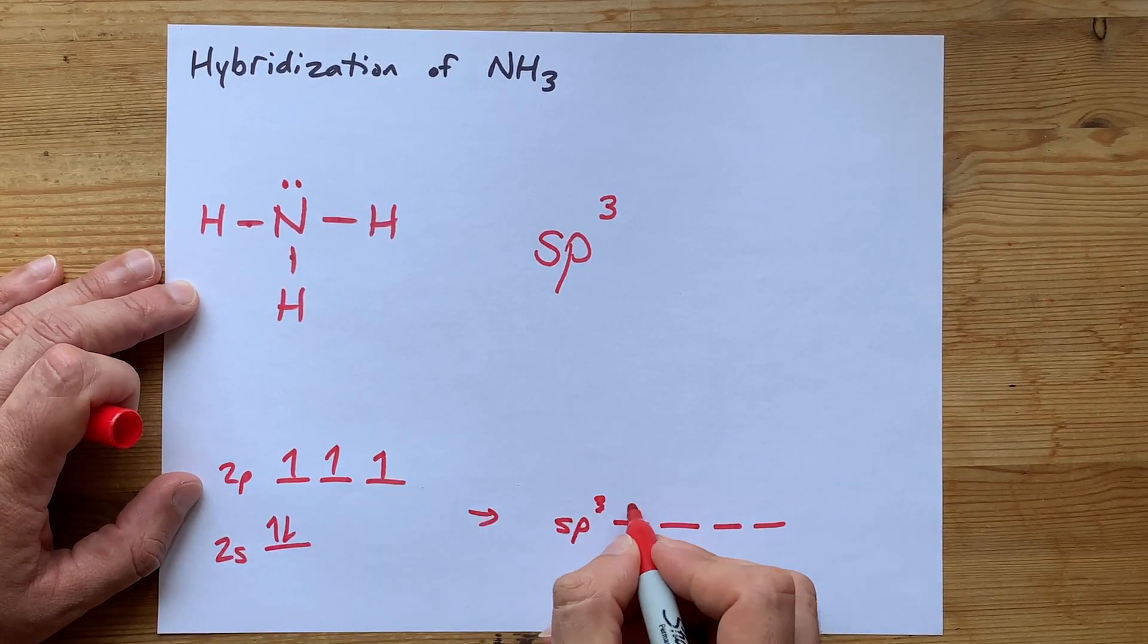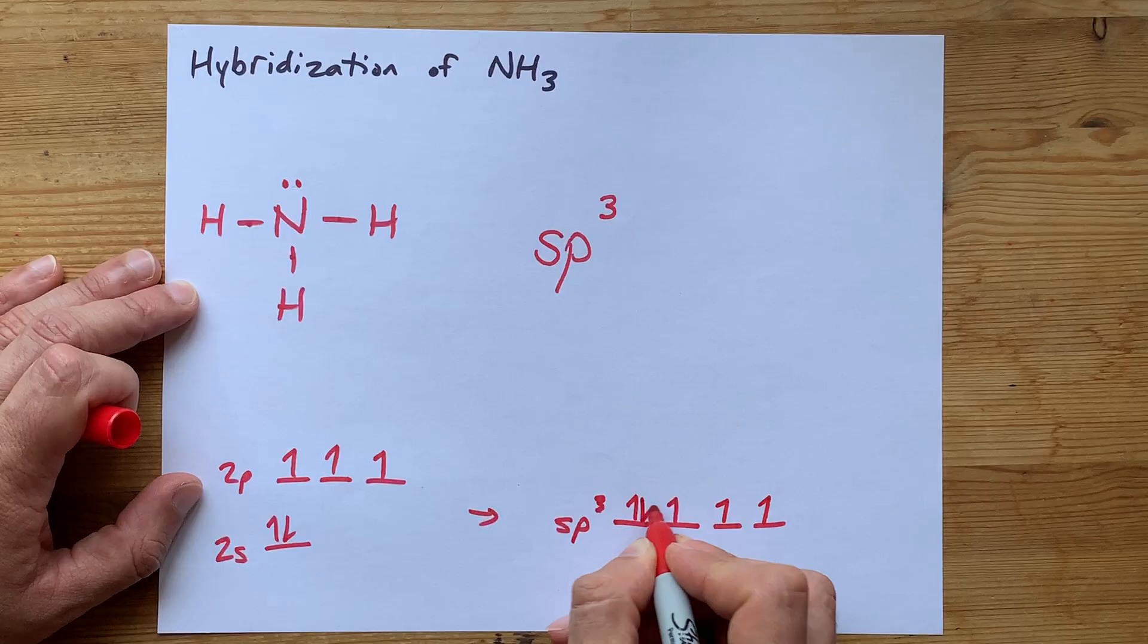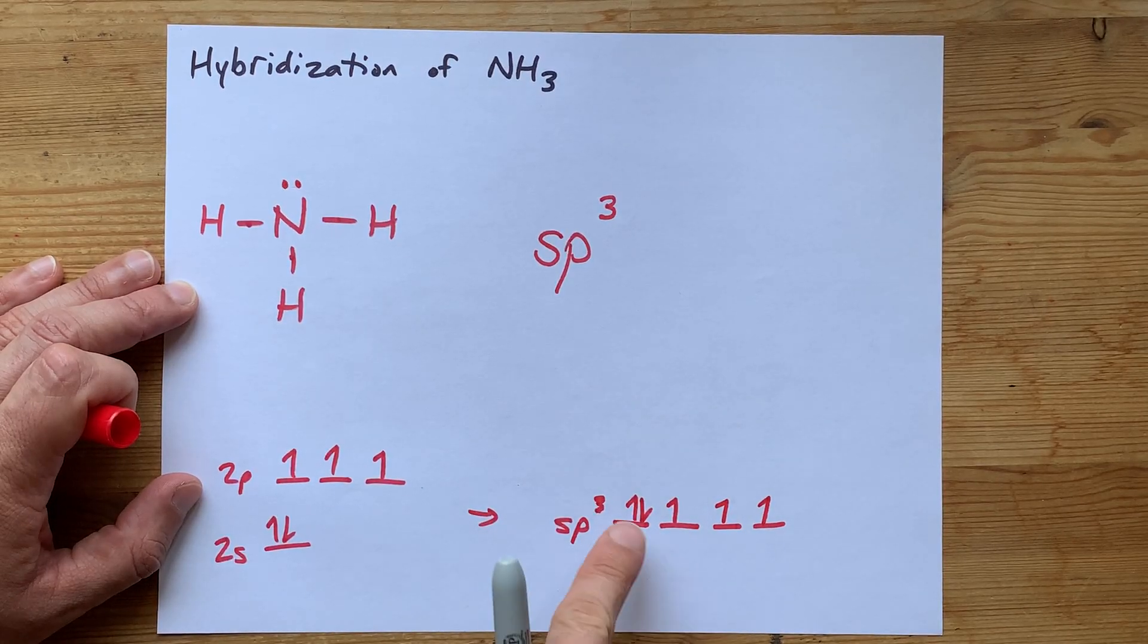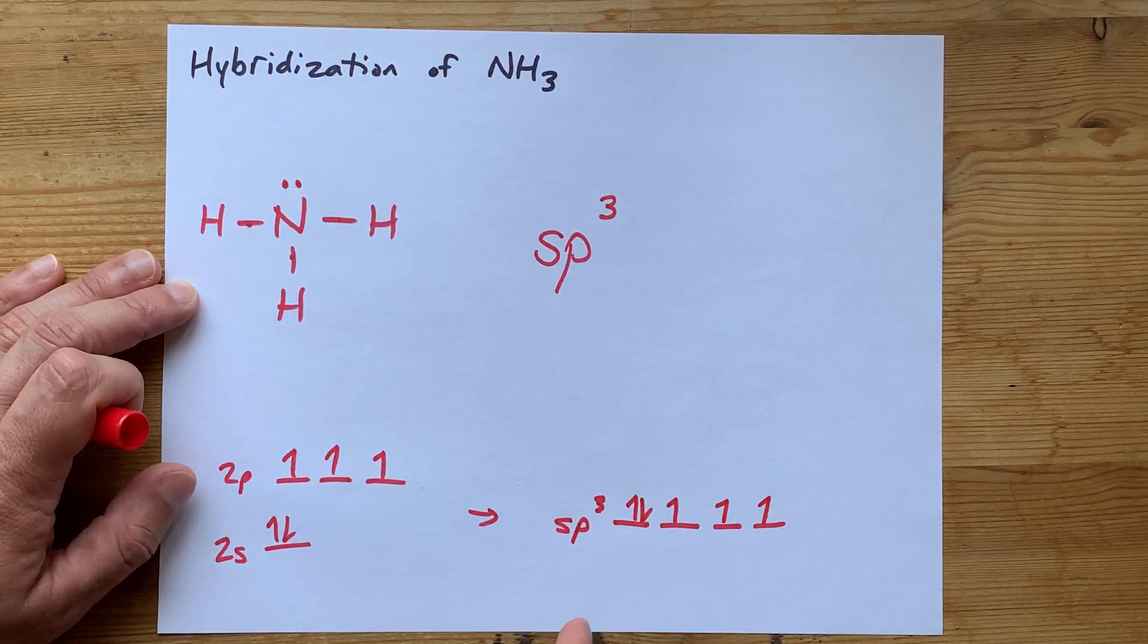and we're going to fill it with those five electrons: 1, 2, 3, 4, 5. Oh look, there's your lone pair, and there's the three sigma bonds that you make.